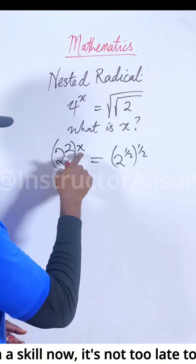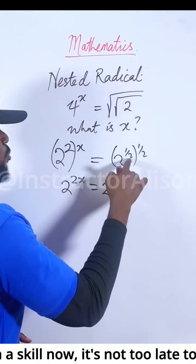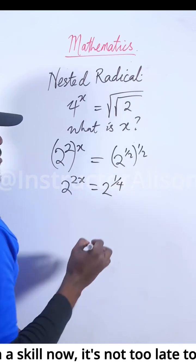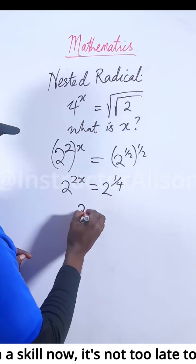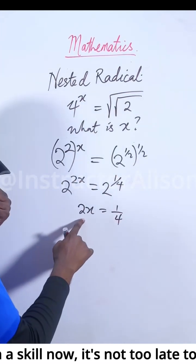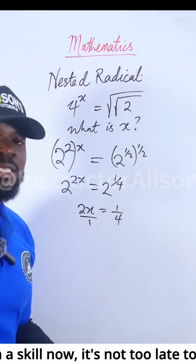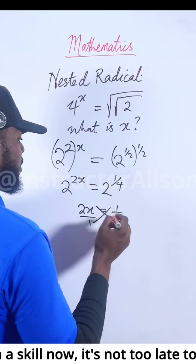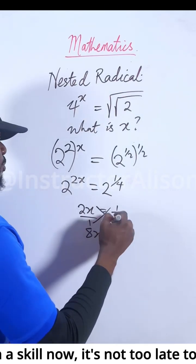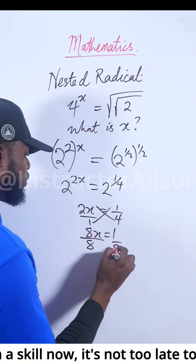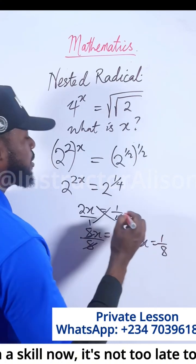So what you're going to do now: 2 times x, now 2x equal to 1 times 1, now 1. 2 times 2, now 4. Anytime we carry like this, the base is the same, so we equate the power. 2x equal to 1 over 4. Remember, 2x is the same thing as 2x over 1, because 2x divided by 1 is the same thing as 2x. So cross multiply: 4 times 2x will give us 8x, equal to 1 times 1, gives us 1. If you divide both sides by 8, x is equal to 1 over 8. That's how to decide this question.